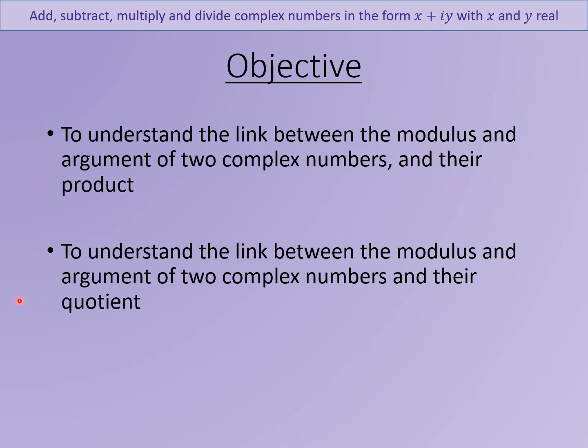We're then going to do the same but look at the quotient. So what happens if you divide one complex number by another? How does the modulus and the argument of the answer relate to the modulus and the argument of the original two numbers?